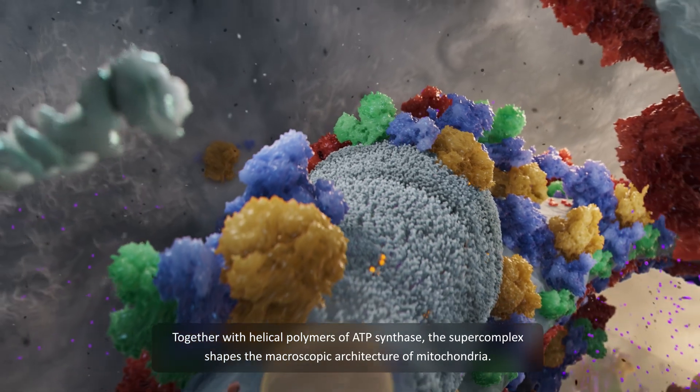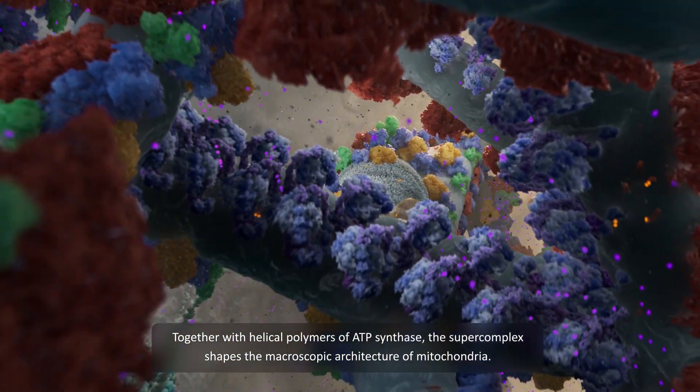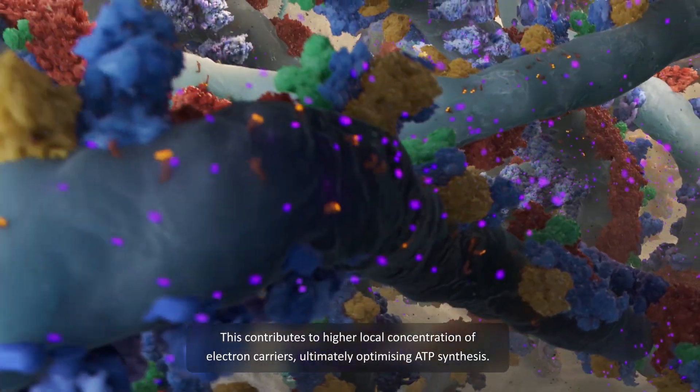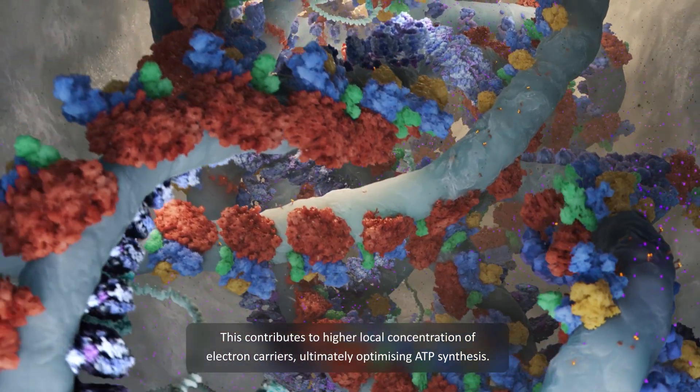Together with helical polymers of ATP synthase, the supercomplex shapes the macroscopic architecture of mitochondria. This contributes to higher local concentration of electron carriers, ultimately optimizing ATP synthesis.